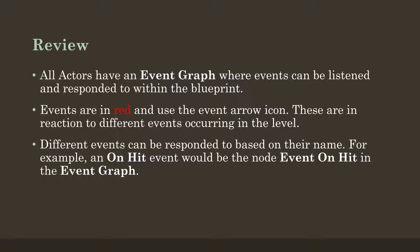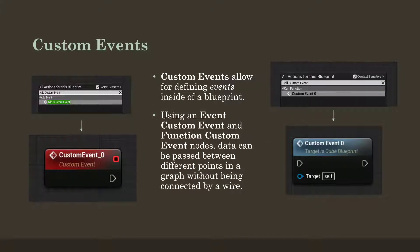We can also define our own events. These are called custom events, and they allow us to define events inside of a Blueprint — so when things happen, do this. What is unique about custom events is that we can exchange data between different points in a graph without the nodes being connected by a wire. We can create different things that receive data within a very complex graph without them being directly connected.